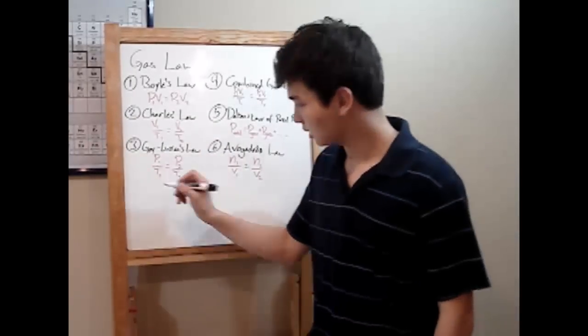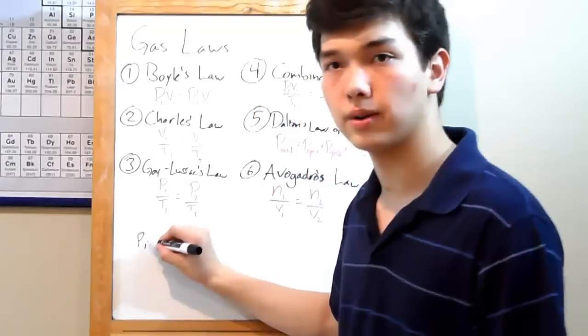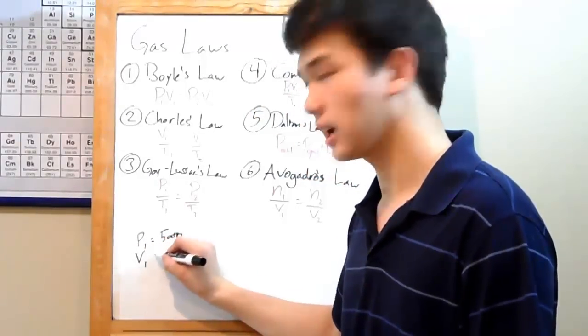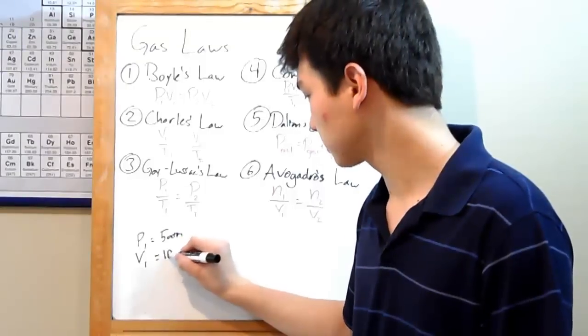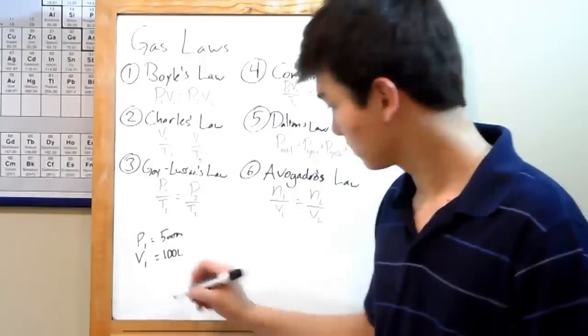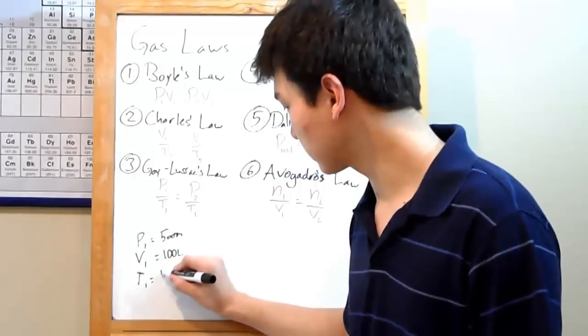Let's say your problem gave you a gas, and your gas was being kept in a container at a pressure of 5 atmospheres. Your container had a volume of 100 liters. The volume of a container is always the same as the volume of a gas. And the temperature it was being kept at was 50 kelvins.